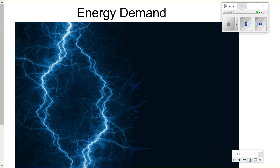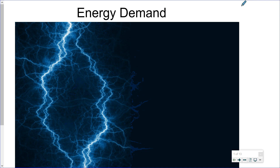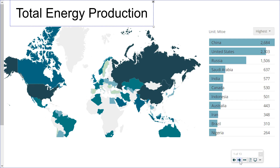So, Science 30, this lesson is on energy demand. It's really an introduction to the last unit, Unit D in Science 30, which is on energy and the environment. Here I'm going to talk about both in Canada and globally, the production and the consumption of energy, and also an introduction to various different energy sources that we use in Canada and around the world.